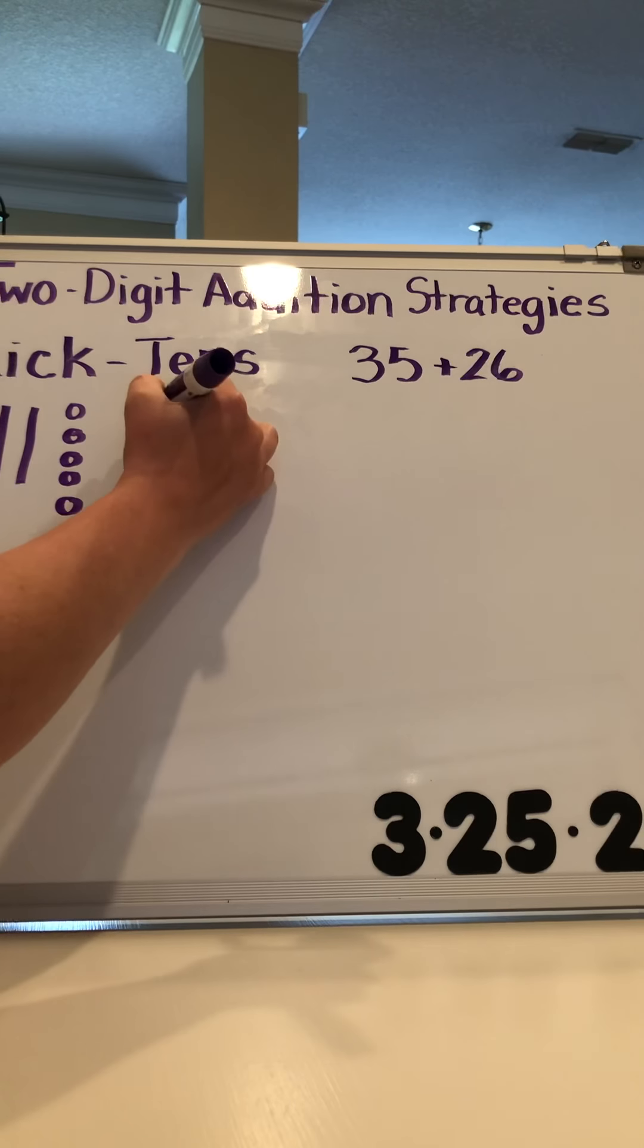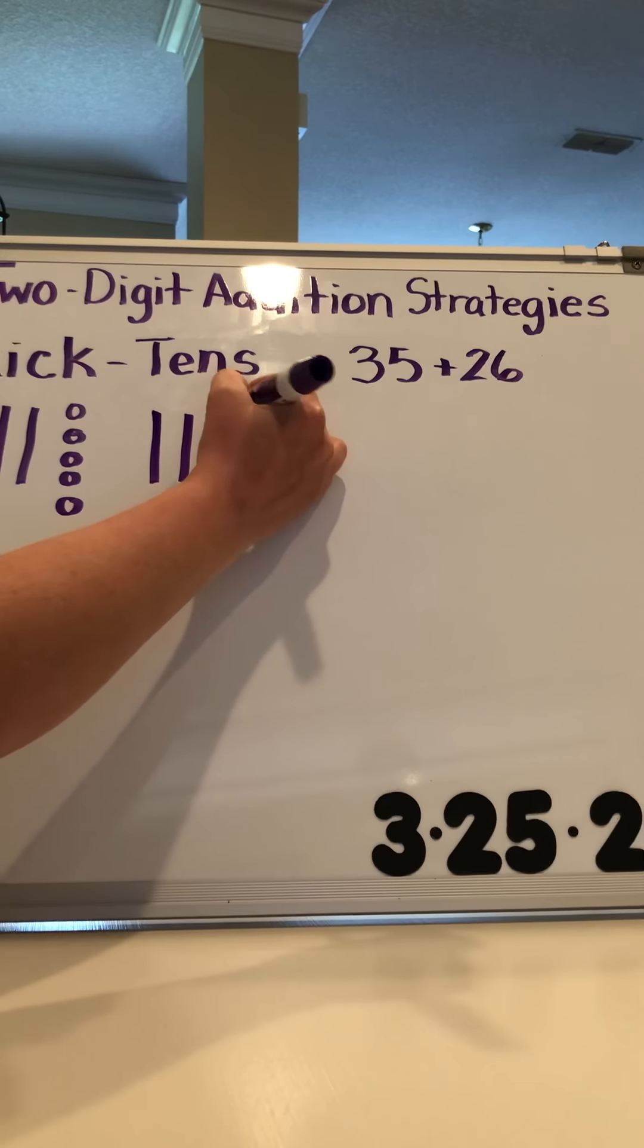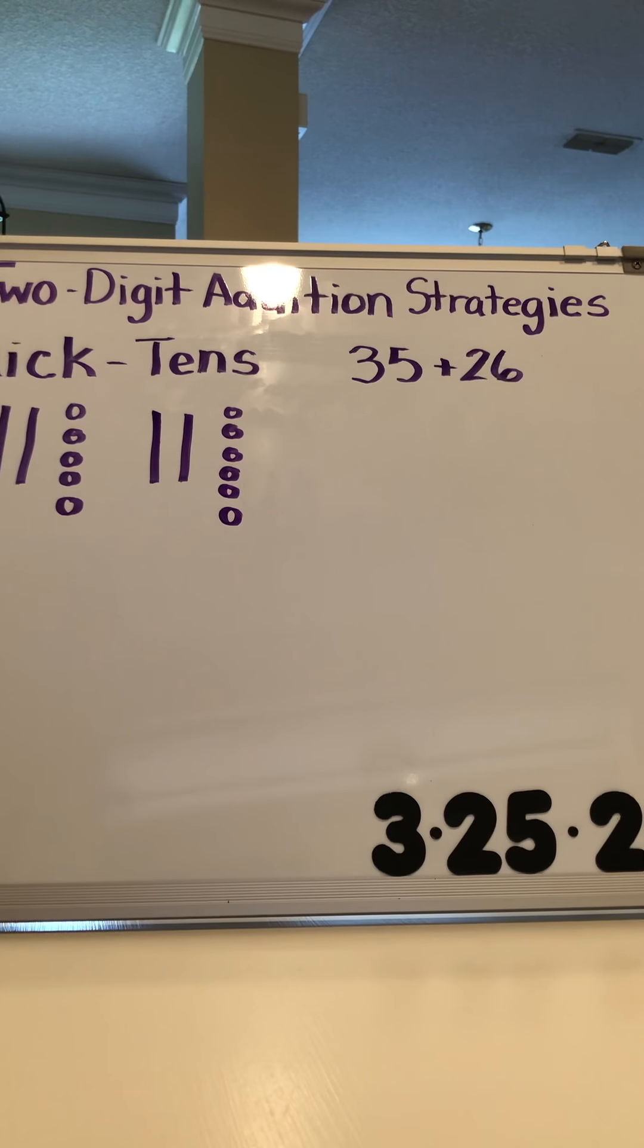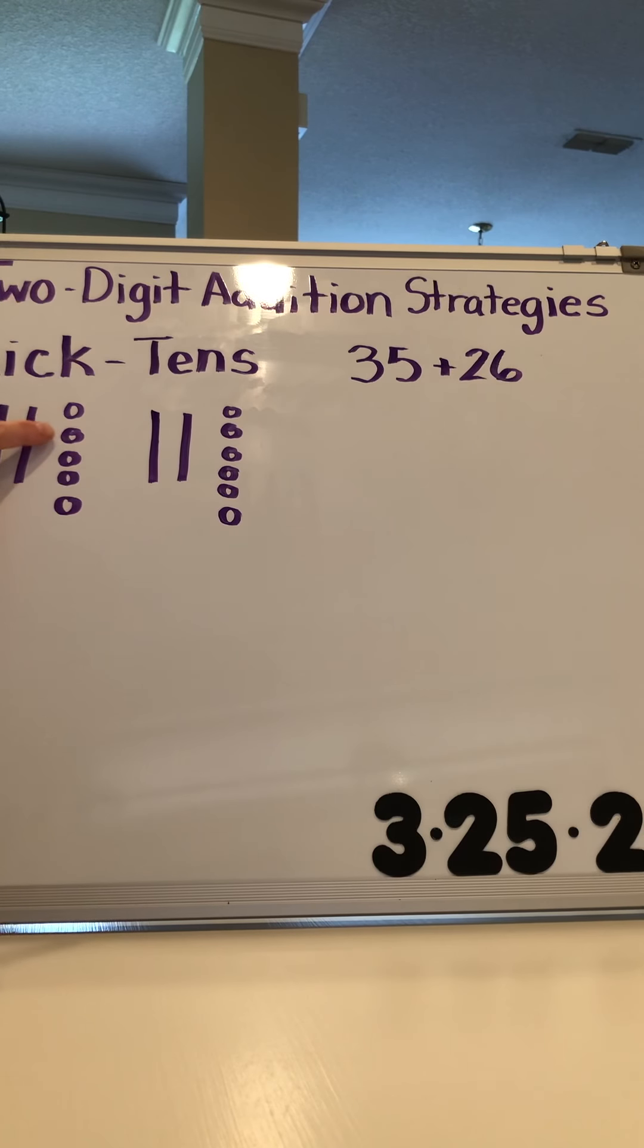They will draw the problem with quick tens: 35, 26. And they will simply count up the quick tens to find the total amount: 10, 20, 30, 40, 50, 51, 52, 53, 54, 55, 56, 57, 58, 59, 60, 61.